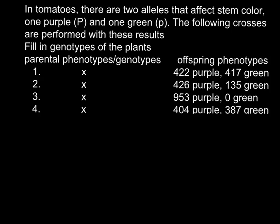Today's problem is: in tomatoes there are two alleles that affect stem color — one purple and another one green. We designate them with capital P and small p. The following crosses are performed with these results, and here you have to fill in genotypes and phenotypes depending on the offspring phenotypes.